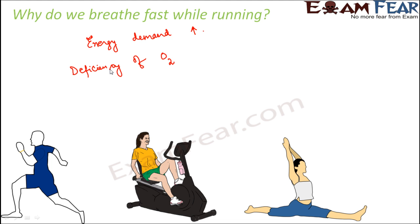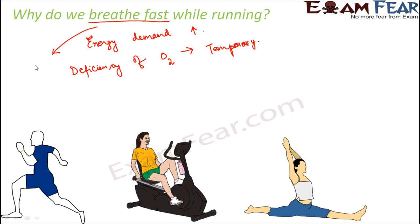This deficiency of oxygen is only temporary — it happens only as long as you are performing the exercise. To compensate for that deficiency of oxygen, we tend to breathe fast. When we breathe fast, we are breathing in more times per minute, so we are taking in more oxygen. In order to meet the energy demand of our body, we breathe fast during physical activities so that we can inhale more oxygen.